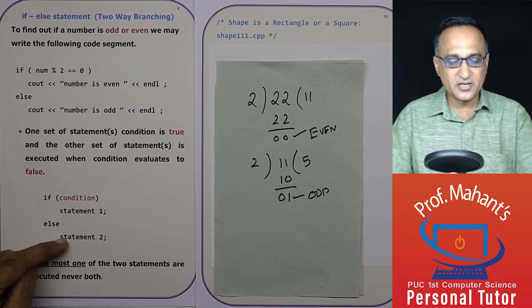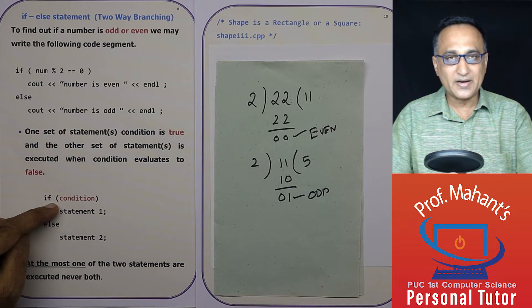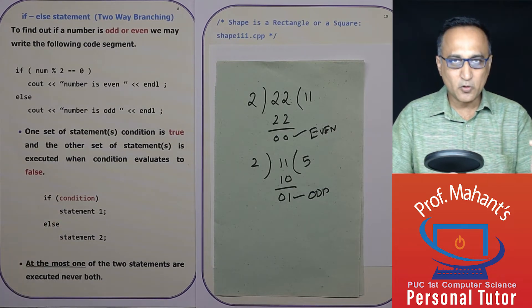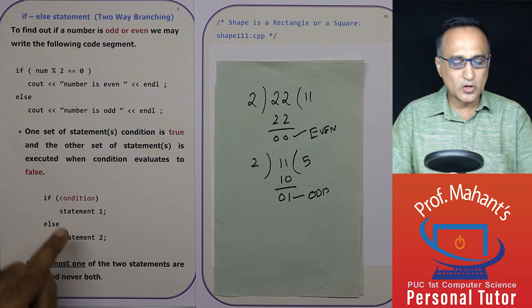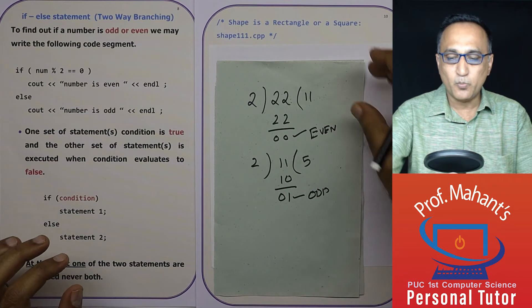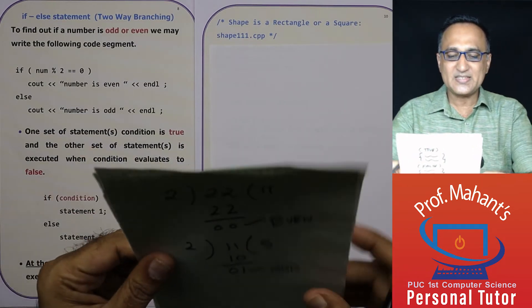This is an example of a simple statement. By putting a flower bracket, it can also be made into a compound statement. Moral of the story: at the most one of these two is going to be executed. It is never possible for both of them to be executed at the same time.